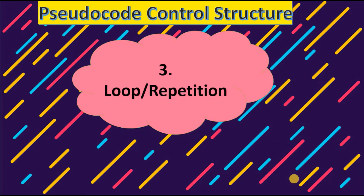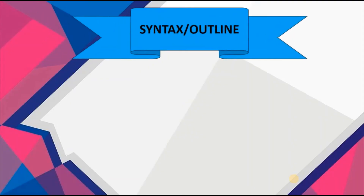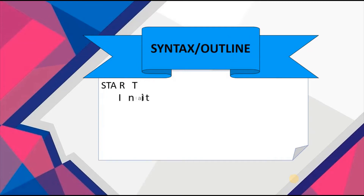Our second type of loop instruction we're looking at is the while loop. The while loop is used when we are not certain of the amount of times that a certain set of instructions is expected to be repeated, because we have not been given a definite number of times. Let's go ahead and see the syntax or the outline of the while loop.